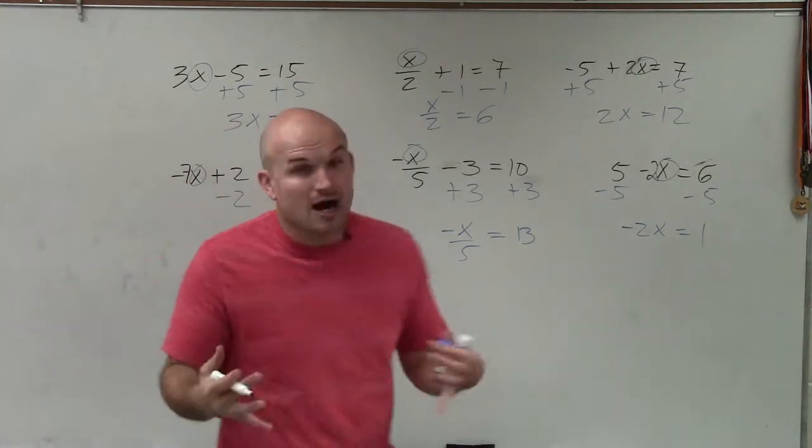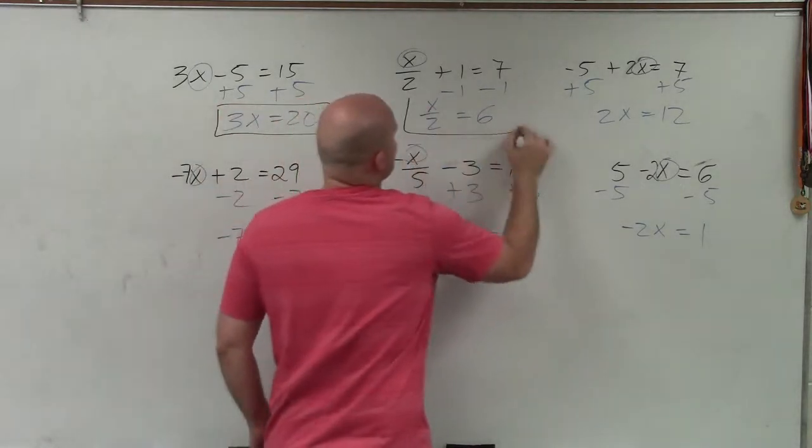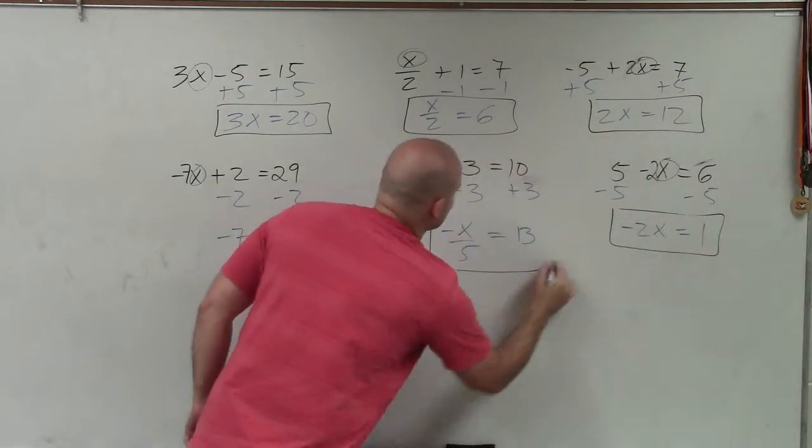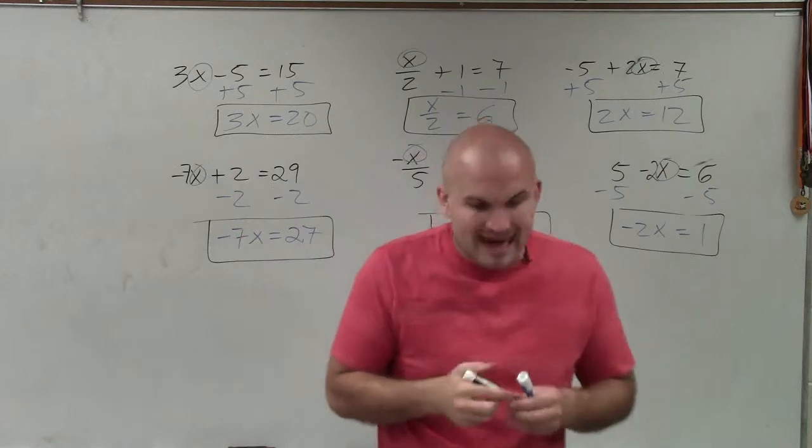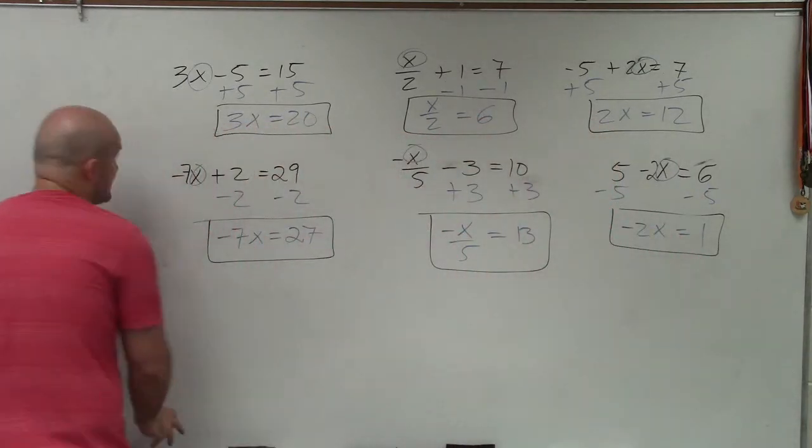So now you can see, in each one of these, I now have a one-step equation. And a one-step equation only has one operation that is happening to the variable. So you can still see, we still have the same variable, but we've got to get the variable by itself.